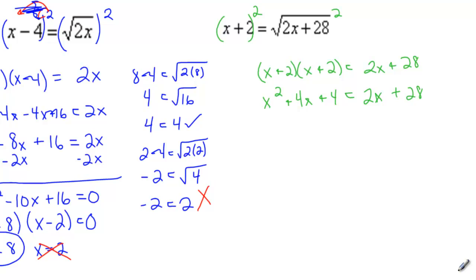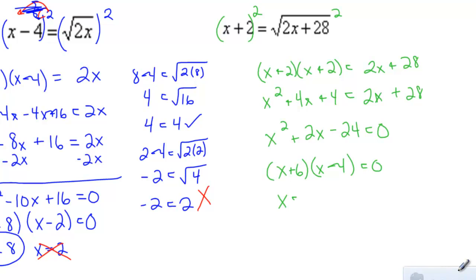Equals 2x plus 28. If I subtract 2x from both sides and subtract 28 from both sides, I'm going to get x squared plus 2x minus 24 equals 0. Now I'm looking for two numbers that multiply together to give me negative 24 and add together to give me 2. I'm going to go with x equals positive 6 and negative 4, giving me x equals negative 6 and x equals 4.